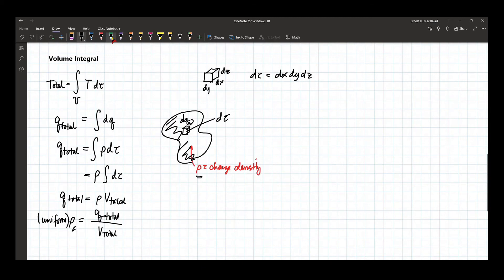Just to give you an idea, in Cartesian coordinate system, just to summarize, DL is generally expressed as a vector quantity in three dimensions: dx x-hat plus dy y-hat plus dz z-hat.